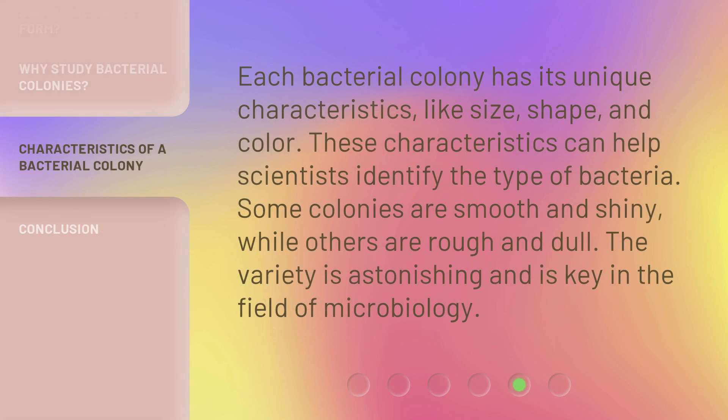Each bacterial colony has its unique characteristics, like size, shape, and color. These characteristics can help scientists identify the type of bacteria. Some colonies are smooth and shiny, while others are rough and dull. The variety is astonishing and is key in the field of microbiology.